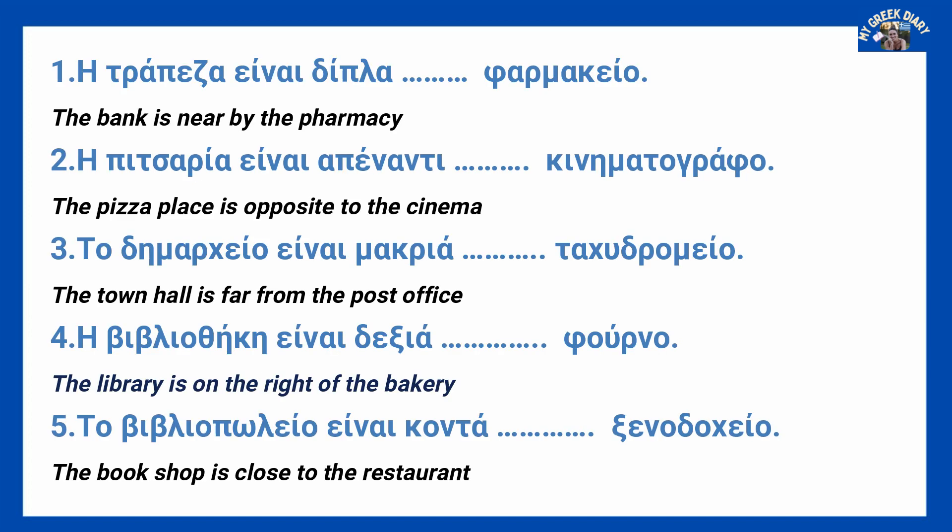Now let's do the exercise. Η τράπεζα είναι δίπλα — φαρμακείο. Η πιτσαρία είναι απέναντι — κινηματογράφο. Το δημαρχείο είναι μακριά — ταχυδρομείο. Η βιβλιοθήκη είναι δεξιά — φούρνο. Το βιβλιοπωλείο είναι κοντά.